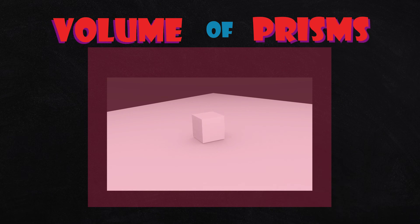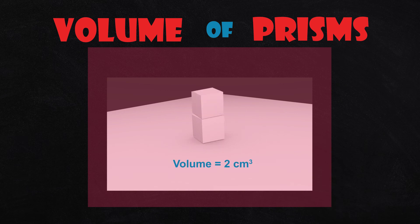This block measures one centimeter by one centimeter by one centimeter. Its volume is one cubic centimeter. Two blocks have a volume of two cubic centimeters, three blocks have a volume of three cubic centimeters, and so on.